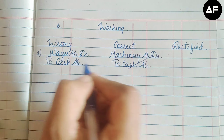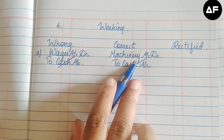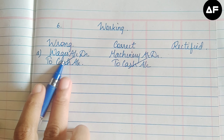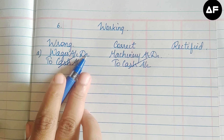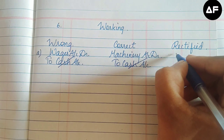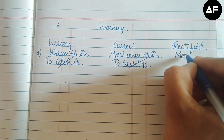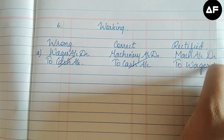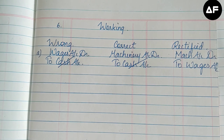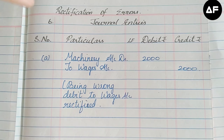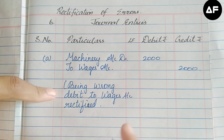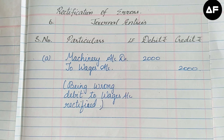The correct entry should be machinery account debited to cash account, since it was towards erecting a machine. Cash account is correct in both entries, so we can cancel it. In the debit, wages must be replaced by machinery. Therefore, the rectifying entry is: Machinery Account Dr. to Wages Account for rupees 2000. Narration: wrong debit to wages account rectified.